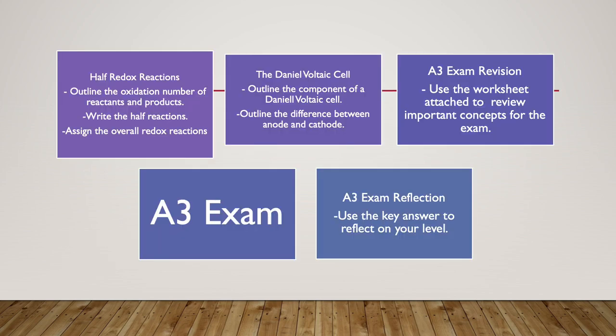During the first day of that week, we will be going over half redox reactions. We will be able to outline the oxidation number of reactants and products to determine which reactant has been oxidized and which has been reduced. We will write the half redox reactions for both oxidation and reduction, outline the number of electrons lost and gained, and finally assign the overall redox reaction by balancing both equations.